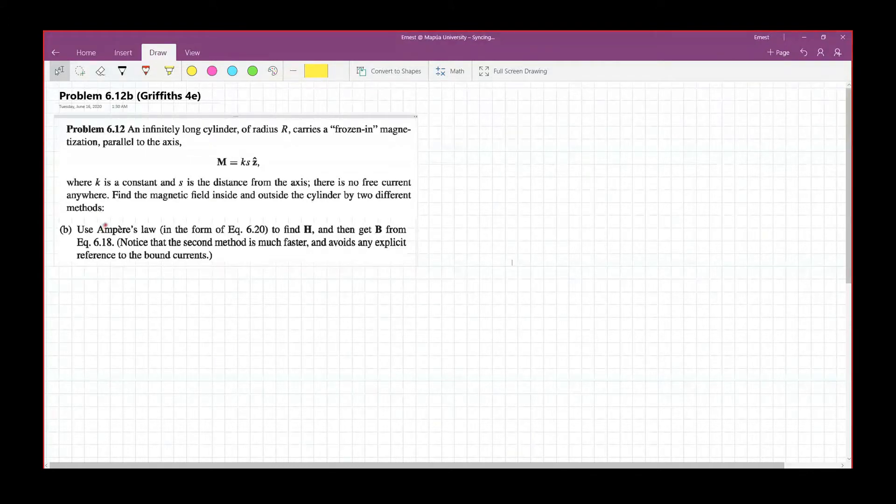For the first method, we locate all the bound currents as we did earlier. And then from there, we calculate using Ampere's law the magnetic field.